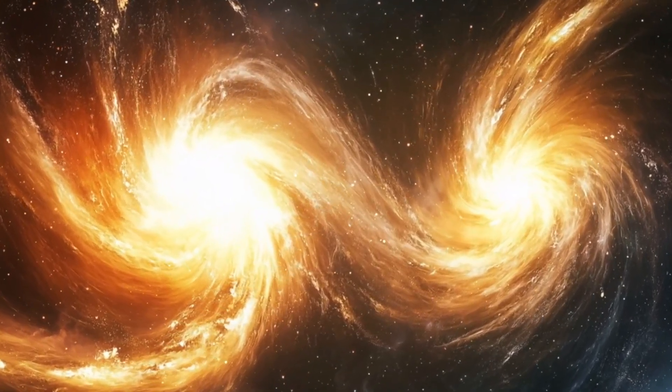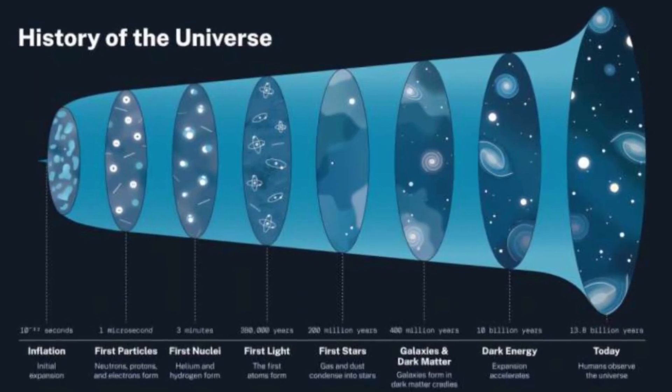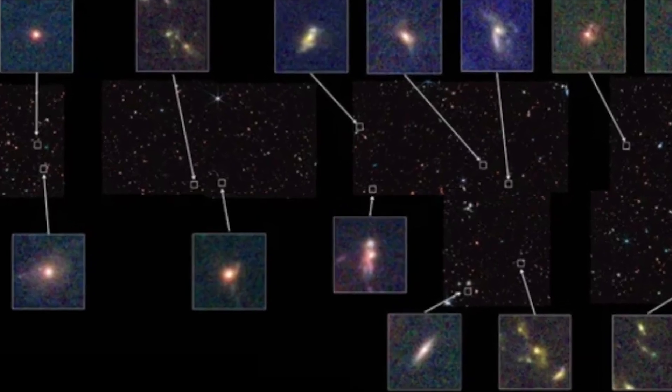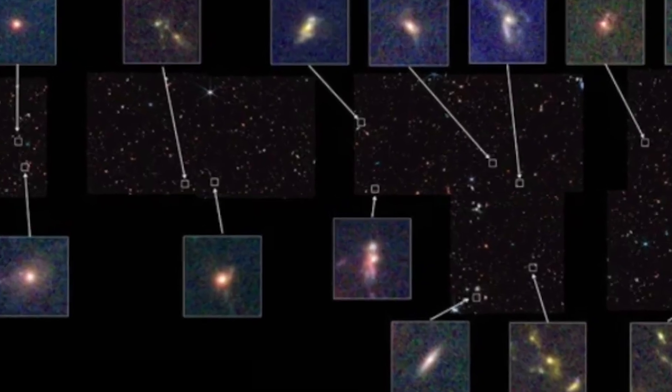The timeline doesn't fit. If galaxies were already massive, organized, and bright only a few hundred million years in the cosmic history, it means our models of how the universe evolves are missing a crucial piece.